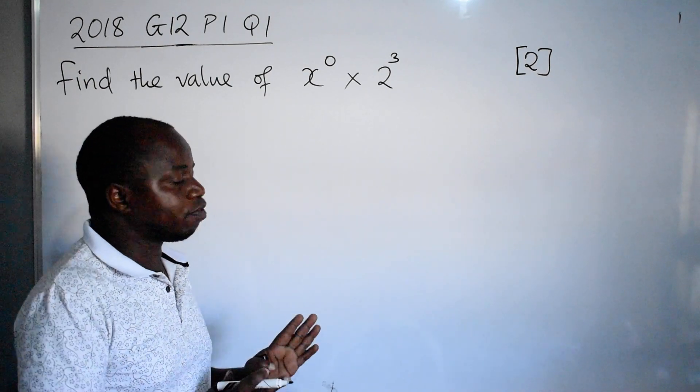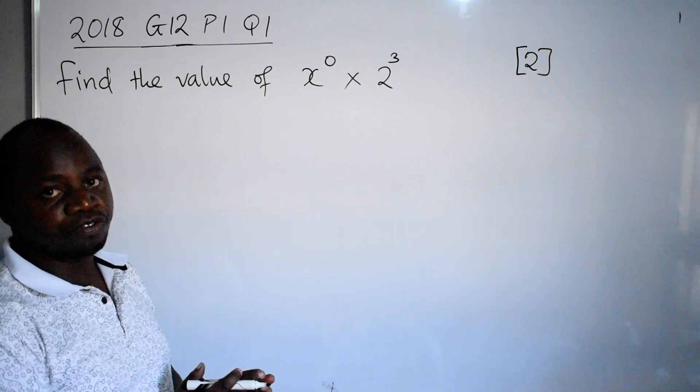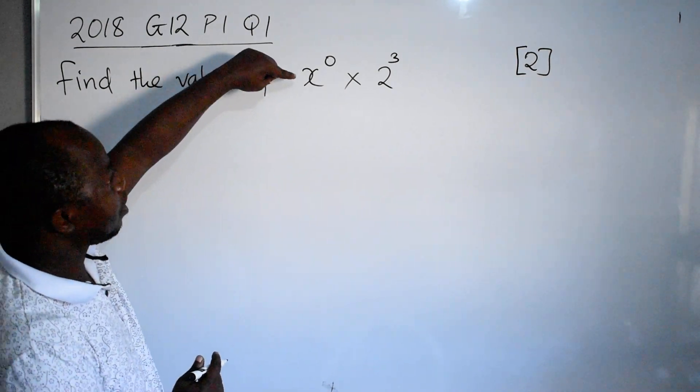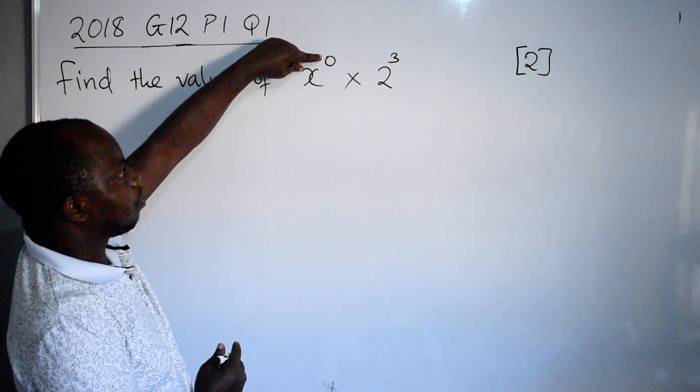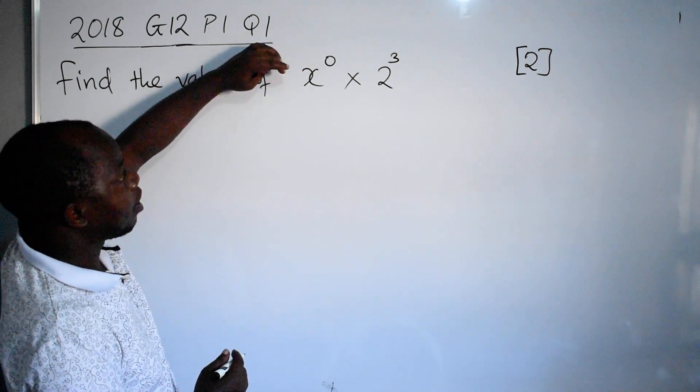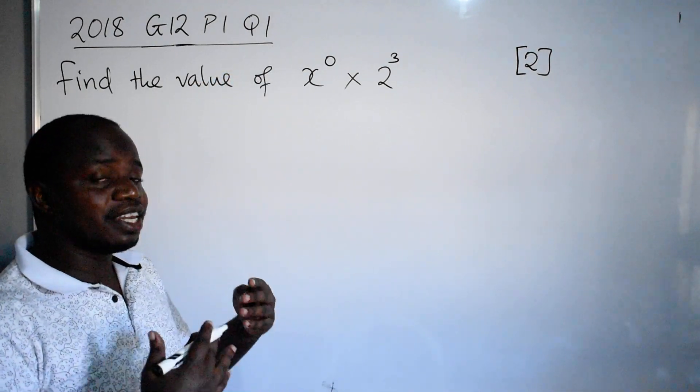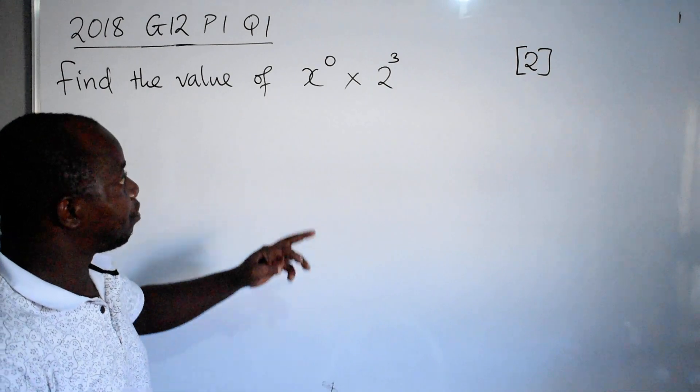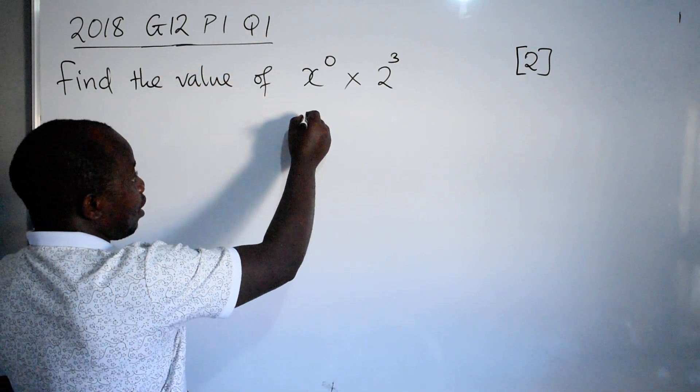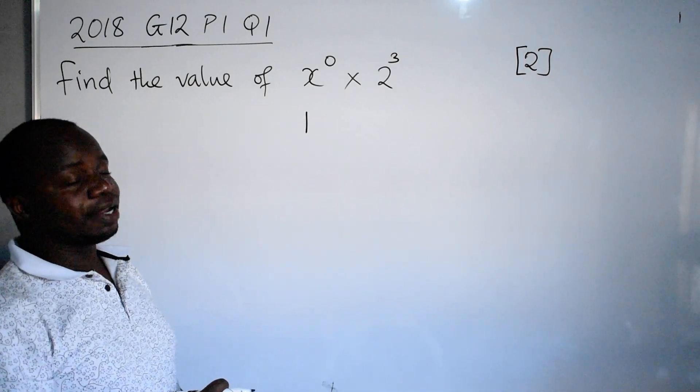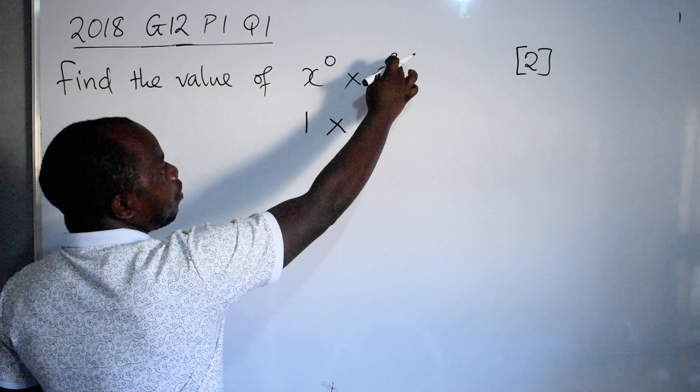It's just a matter of applying the laws of indices. Here we have x raised to the power 0. What do we mean? The laws of indices says any number or variable raised to the power 0, the answer is 1. So here, the answer is 1. You need to know that times 2 to the power 3.